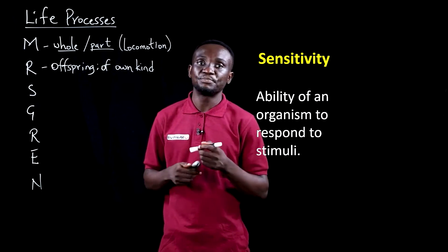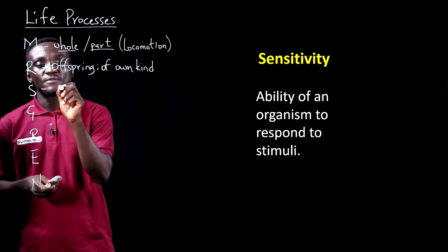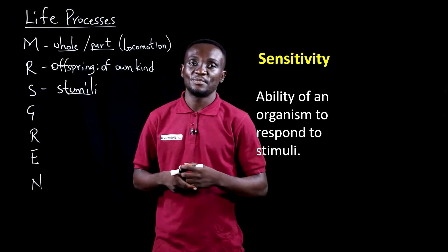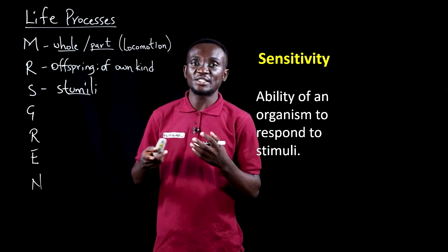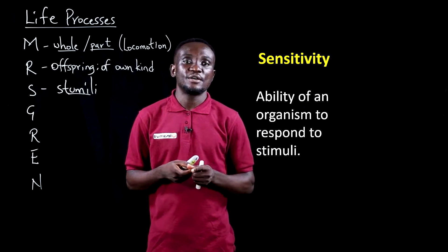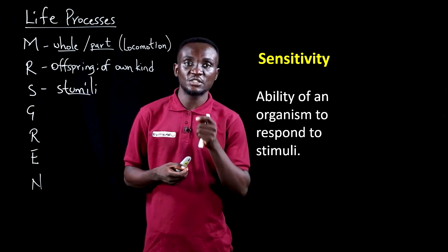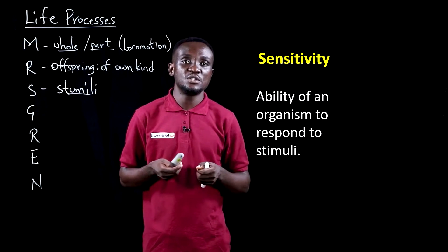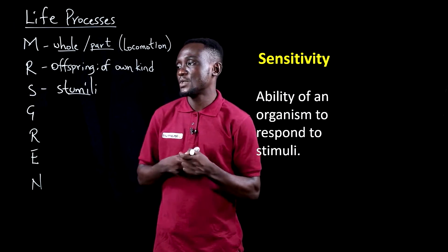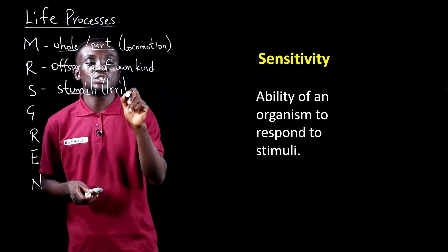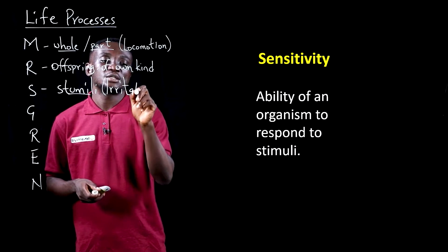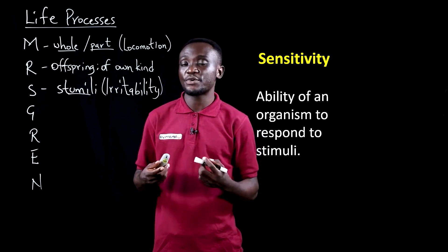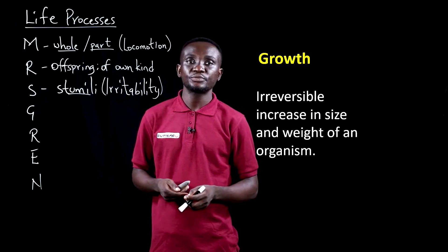Next is sensitivity, which is the ability of the animal to respond to stimuli. A stimulus is a change in the internal or external condition of the animal or organism, and this change largely triggers a response. The response that the living organism gives to stimuli is what we refer to as sensitivity. In the previous lesson, we noted another name for stimuli, which is irritability. So sensitivity and irritability refer to the same thing.